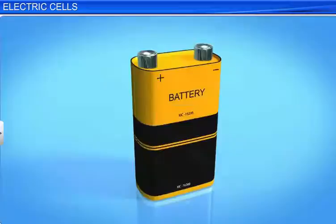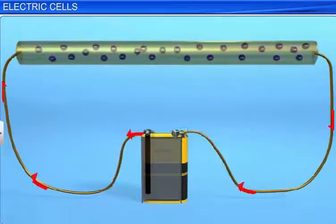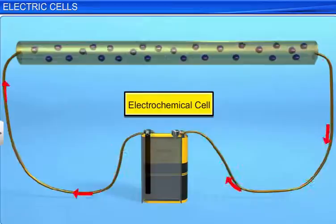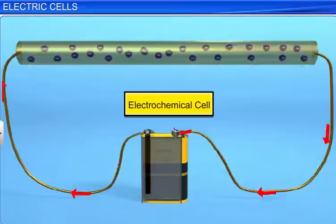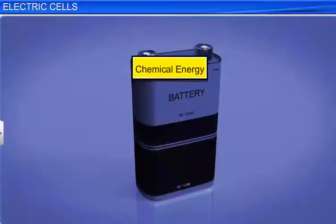An electric cell has two terminals, one positive and the other negative. When a conductor is connected to the terminals of an electric cell, the chemical reaction inside the cell helps maintain the flow of charges through the conductor. That is why an electric cell is also referred to as an electrochemical cell. The work done by a cell to drive a unit positive charge in a closed circuit is called electromotive force, or EMF. Thus, an electrochemical cell is defined as a device that converts chemical energy into electrical energy.